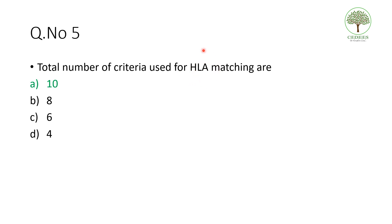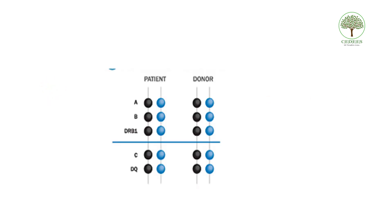HLA is present on chromosome 6 — do not confuse this with the criteria count. The criteria used is 10. The highly expressed loci on HLA are A, B, C, DR, and DQ. There are two alleles of each, giving 10 criteria total. These must be matched with the donor to avoid rejection in transplantation.